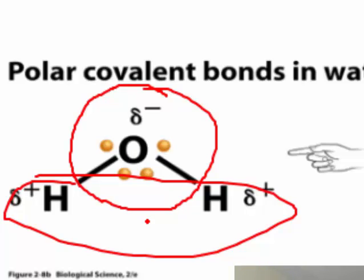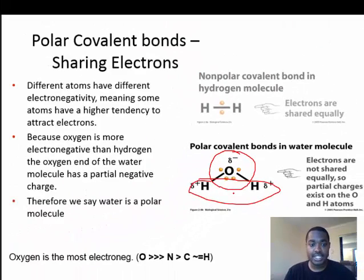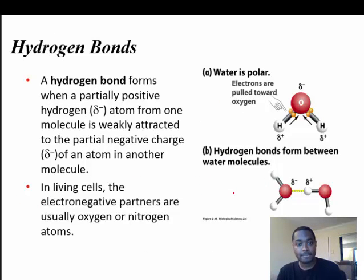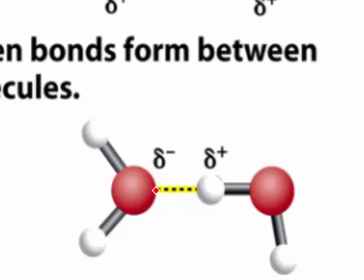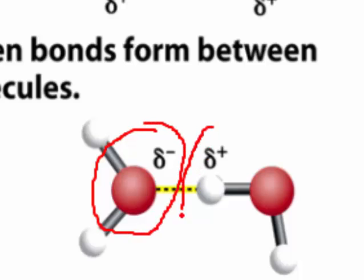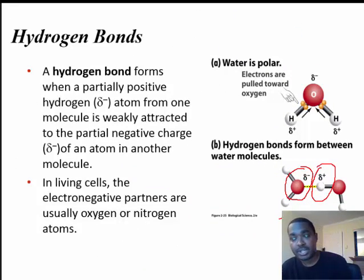Another common electronegative atom you'll be seeing in biochemistry is nitrogen. We have a lot of nitrogen in our bodies, and nitrogen is more electronegative than carbon or hydrogen. Because water is polar, it can form hydrogen bonds with other atoms, particularly other molecules — like other molecules of water. A hydrogen bond forms when the partial negative charge of one oxygen atom in a water molecule interacts with the partial positive charge of hydrogen in an adjacent molecule. These are usually formed when you have nitrogen or oxygen present with carbon and hydrogen.